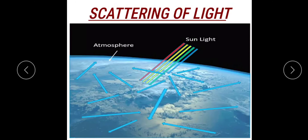An example of incoherent scattering is Raman scattering. In Rayleigh scattering, the intensity of scattered light is inversely proportional to the fourth power of wavelength. That is, intensity I is directly proportional to 1 divided by lambda raised to the power 4 (I ∝ 1/λ⁴). This is the Rayleigh scattering law.